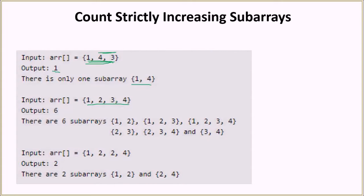Now look at this array [1, 2, 3, 4]. All elements are in increasing order, so there are six strictly increasing sub-arrays. First, pairs of two elements: [1,2], [2,3], and [3,4]. Then pairs of three continuous elements: [1,2,3] and [2,3,4]. The last combination is all four elements: [1,2,3,4]. So in total you get six sub-arrays.